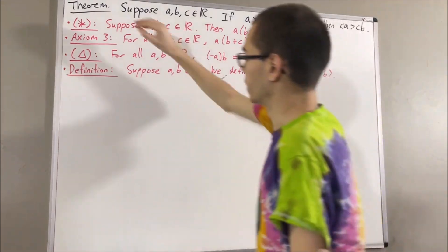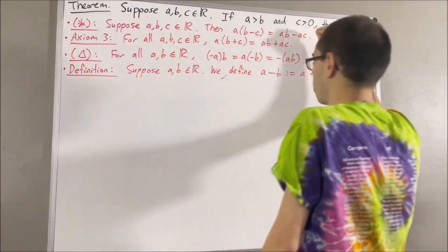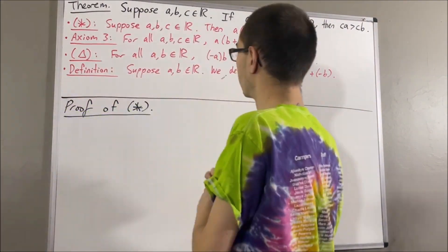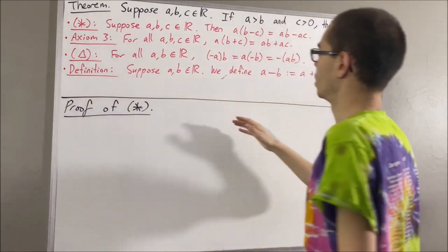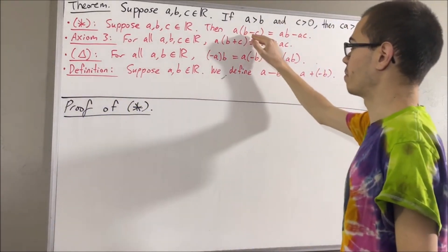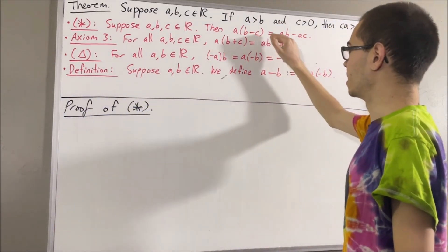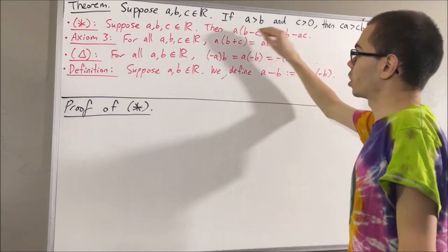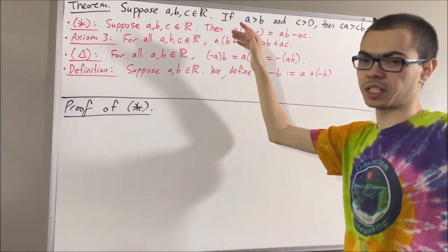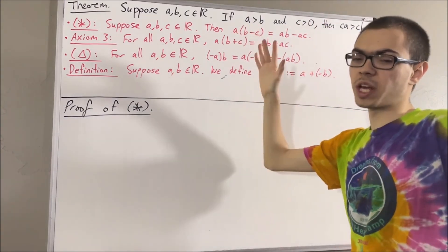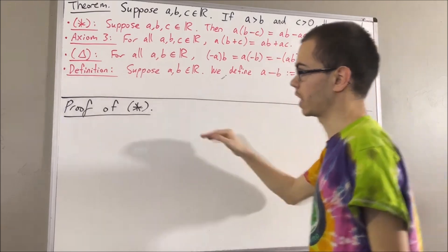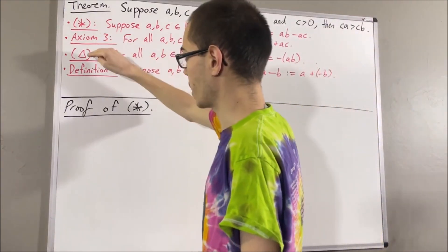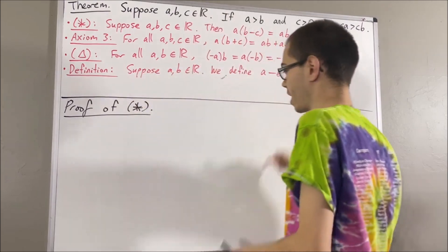So now let's get into proving this preliminary result. The whole goal is to show that A times B minus C is equal to AB minus AC, and we're going to show that through a chain of equalities, applying axiom 3, the fact about negatives, and the definition of subtraction.